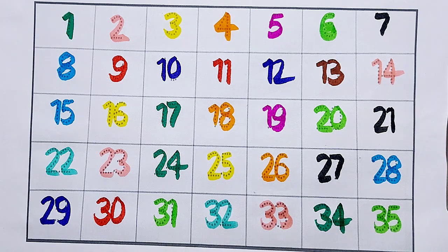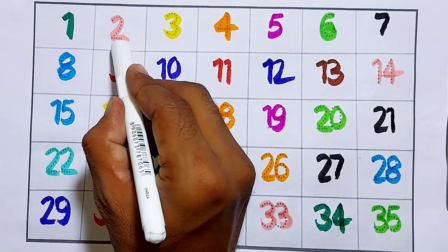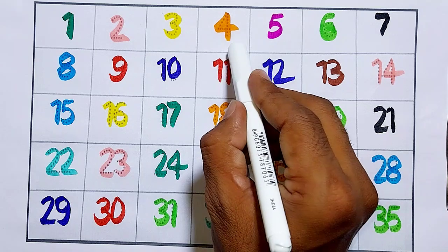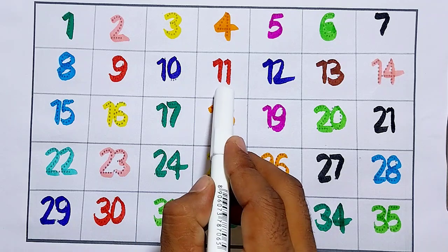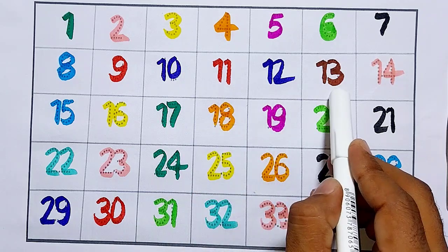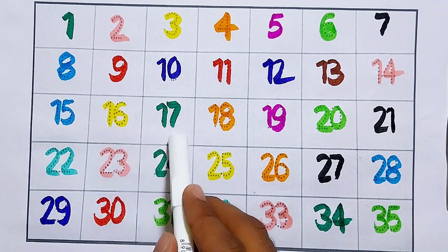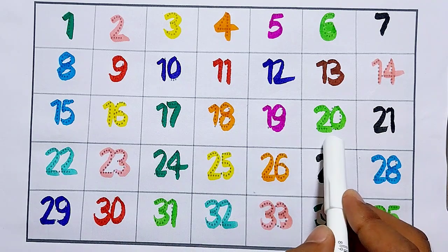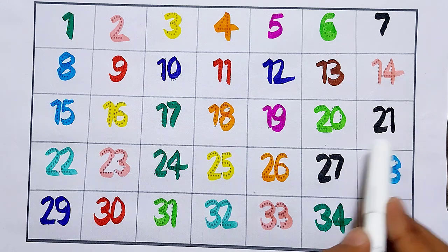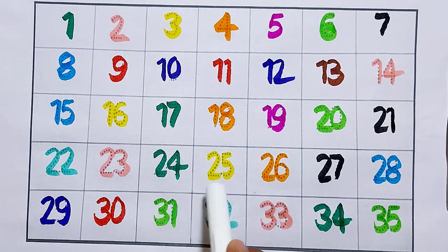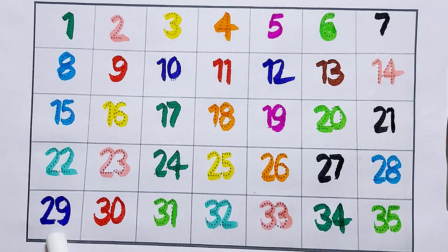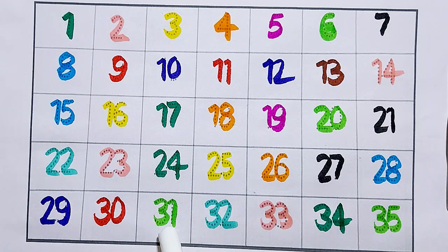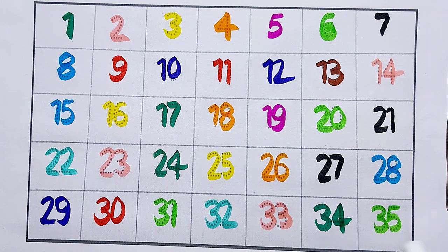Thirty-five. One two three four five six seven eight nine ten eleven twelve thirteen fourteen fifteen sixteen seventeen eighteen nineteen twenty twenty-one twenty-two twenty-three twenty-four twenty-five twenty-six twenty-seven twenty-eight twenty-nine thirty thirty-one thirty-two thirty-three thirty-four thirty-five.